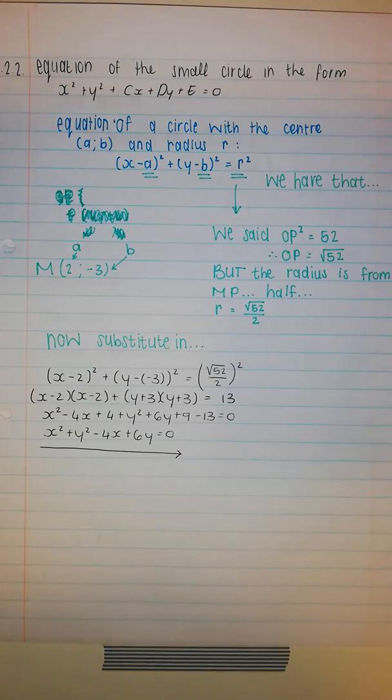Now, the next question asks for the equation of the small circle in the form x squared plus y squared plus cx plus dy plus e equals zero.